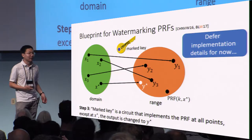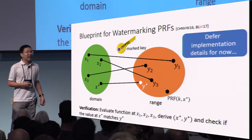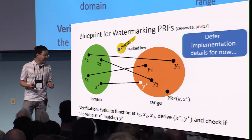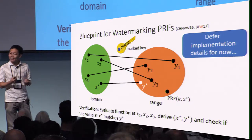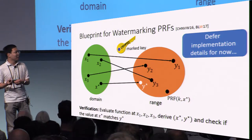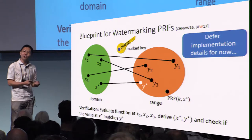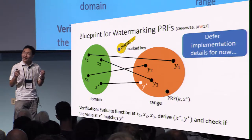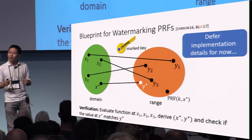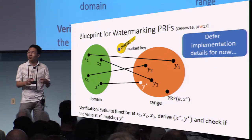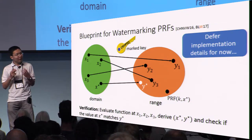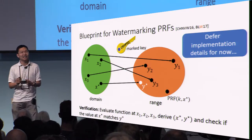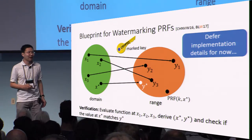How do we verify if we have a marked key that implements this type of functionality? It's very simple. All we need to do is evaluate at the same set of test points, derive the special point x* and y*, and then evaluate this candidate program at x* and check if we get the value y* or not. In its essence, x* and y* function as the watermark. We took the original pseudo-random function and created a new function that only differs at the single point x*.